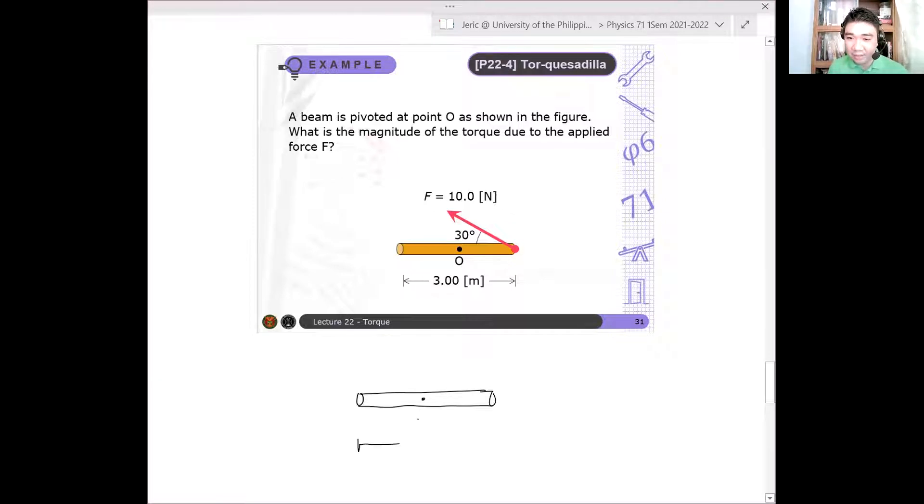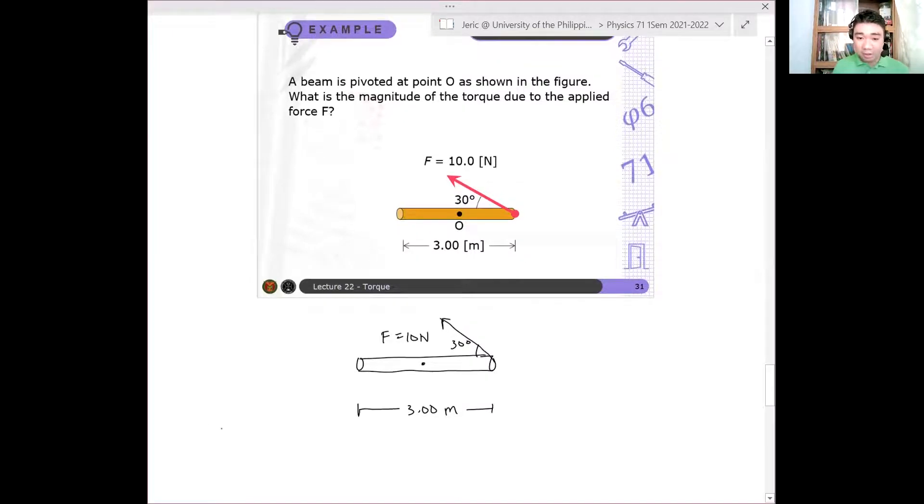And this, the total length of this rod here is 3.00. Then a force is applied in this direction. So a force given by 10 newtons is applied at an angle 30 degrees relative to the beam. Now, again, to determine the torque. The magnitude of the torque is just equal to R times F times sine of the angle between them.